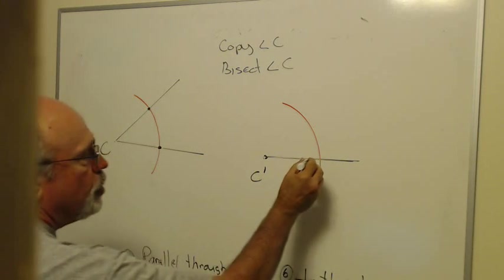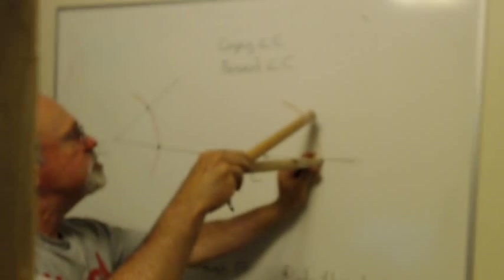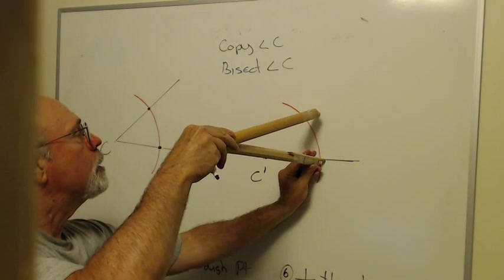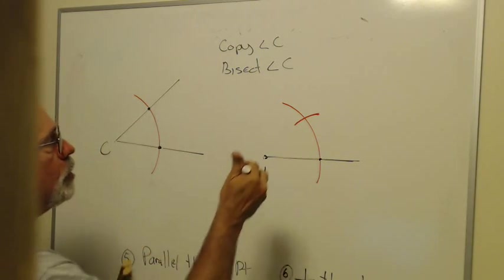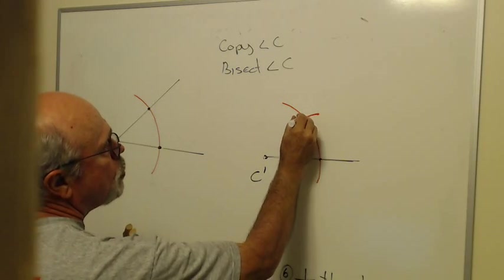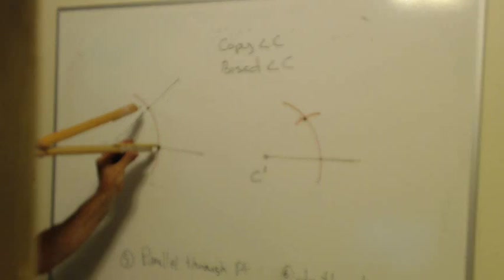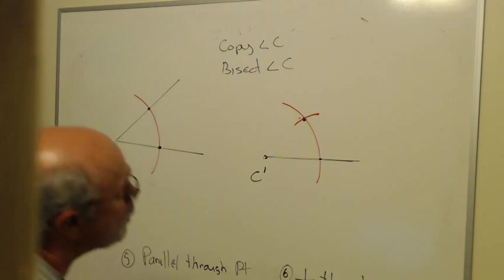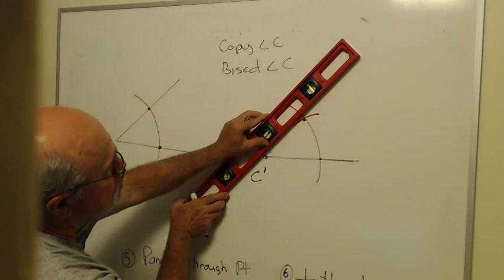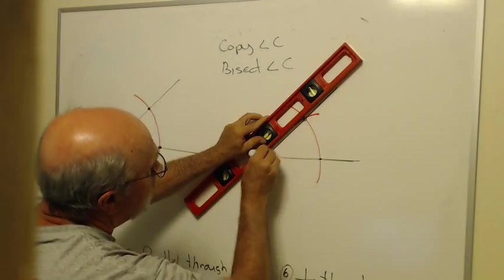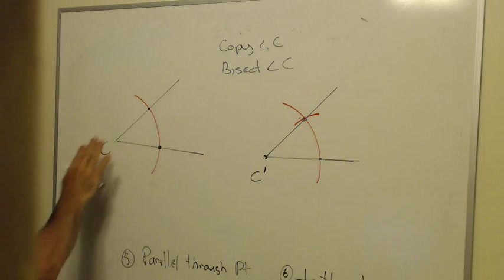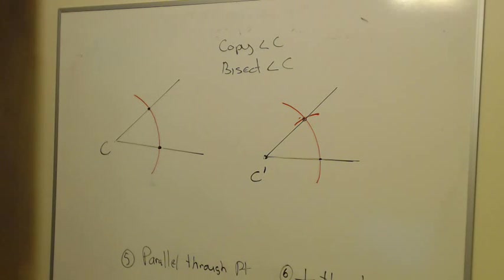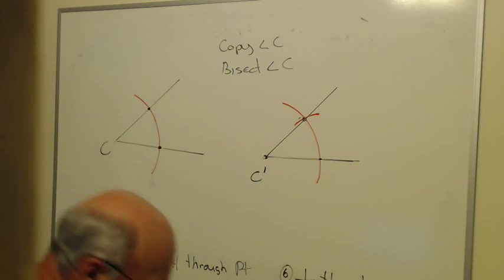Now I'm going to put the pointy end right here and draw an arc that crosses the existing arc. This new point will be just exactly as far apart as those two points. That's going to guarantee that my new angle is congruent to the original. So now I just go like that, and my new angle C prime is congruent to the original angle C.